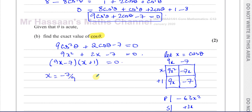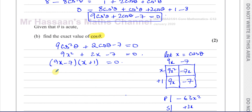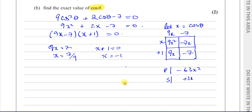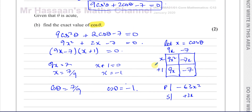From (9x − 7)(x + 1) = 0, we get x = 7/9 or x = −1. Since x = cos θ, that means cos θ = 7/9 or cos θ = −1.